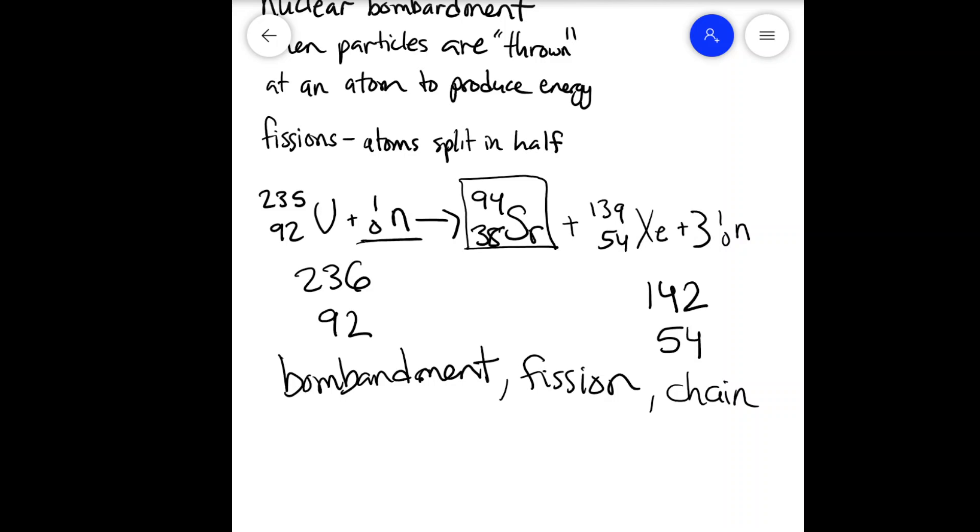So that's how you tell if bombardment, you have a particle here on the reactant side, unless you're doing electron capture. But from the examples I've seen, it's either going to be a neutron or an alpha. And then if you have two separate elements, atoms, on your product side, that's fission. You broke this, you're starting one apart. And then if you have, say, three neutrons, if you have neutrons more than one, that could start a chain reaction.